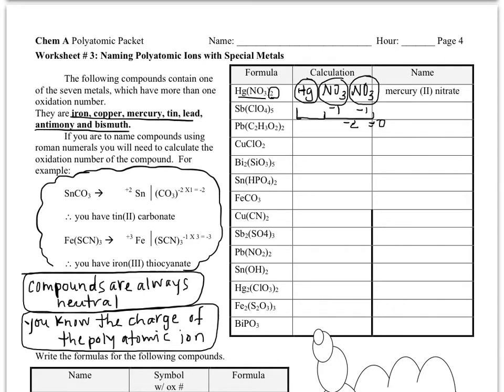Well, if mercury had a plus one charge, that's not gonna work. Plus one and a negative two, they don't add to zero. So this mercury must have a charge of plus two. And so that's why we call this mercury Roman numeral two nitrate. Quite similar to what you've done on the ionic compounds packet.